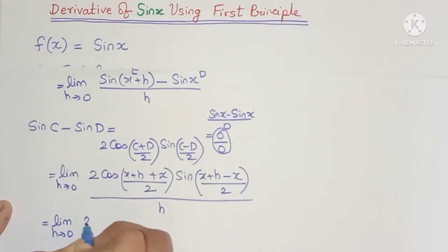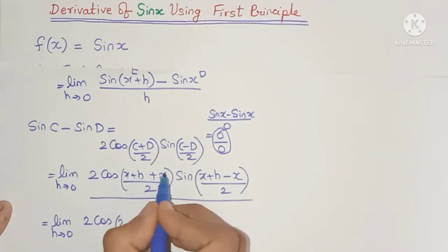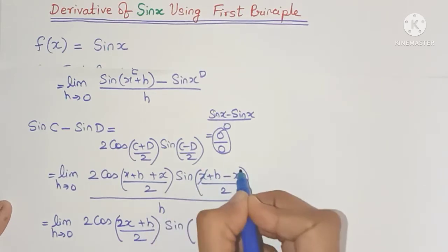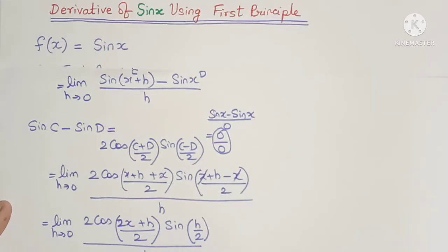Now we'll get limit h tends to 0, 2 cos. Now x plus x will give me 2x plus h divided by 2 into sin of, and x minus x will get cancelled, so I'll get h by 2, the whole divided by h.